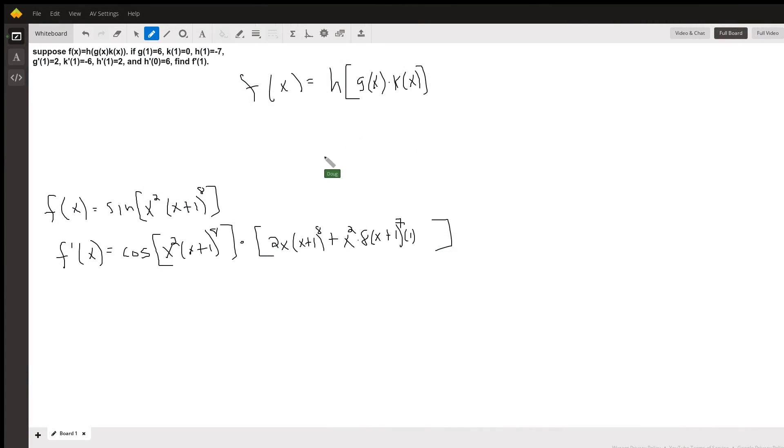To help see what's going on here, I've made up a problem that fits a similar pattern. We've got f of x equals the sine of this function inside the brackets, and if I want to take the derivative of that function,